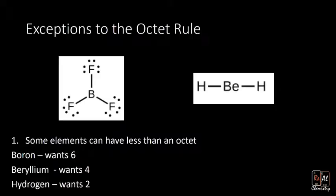Okay, first, the exceptions. One type of exception is when we have less than an octet, and we've already seen some of that. Hydrogen is the most important example where we want less than an octet. We're just going to give the number they each want, and you're going to need to memorize that. Some elements have less than an octet. Hydrogen wants two, we already know that. Boron turns out to want six.